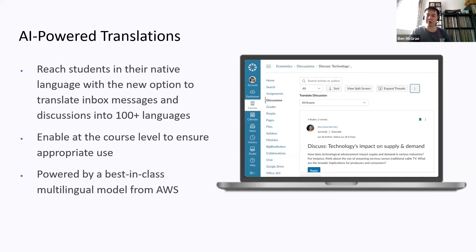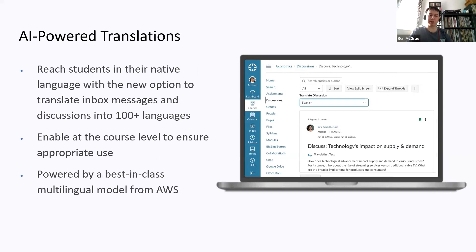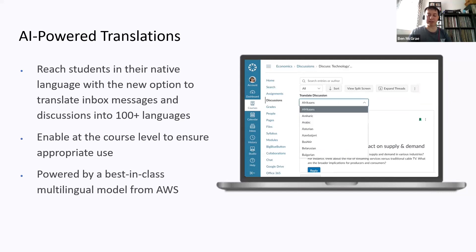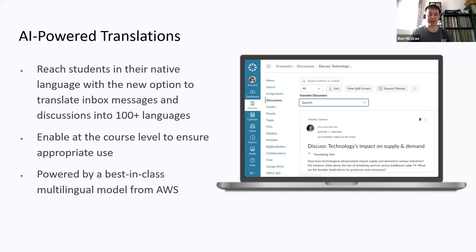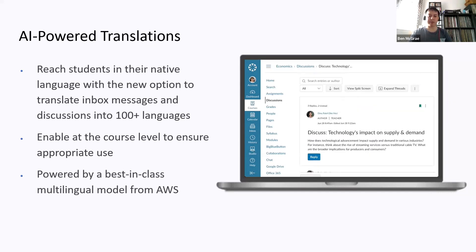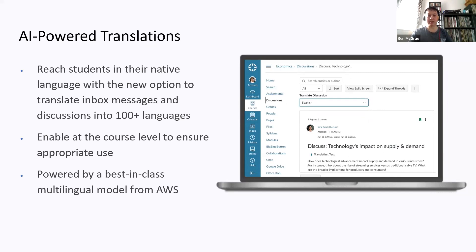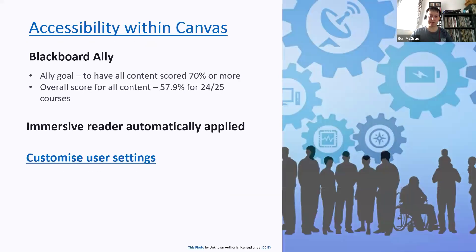Canvas is also developing better translation models, so students can change the language of course content. This builds on the existing Immersive Reader functionality. It will use a multilingual model from Amazon Web Services and will translate discussions, group areas, pages, and other course content. It can be enabled at the course level so tutors can turn it on or off. With AI powering it, translations will update as language evolves — even picking up modern slang.